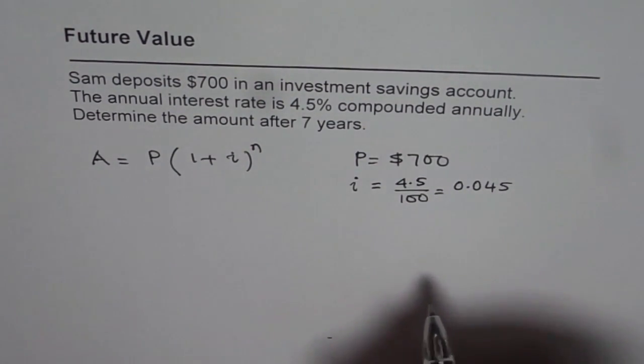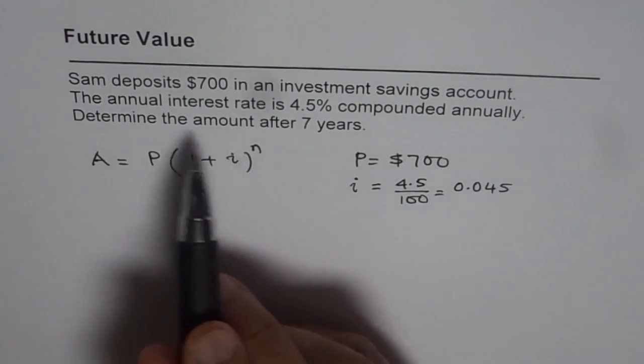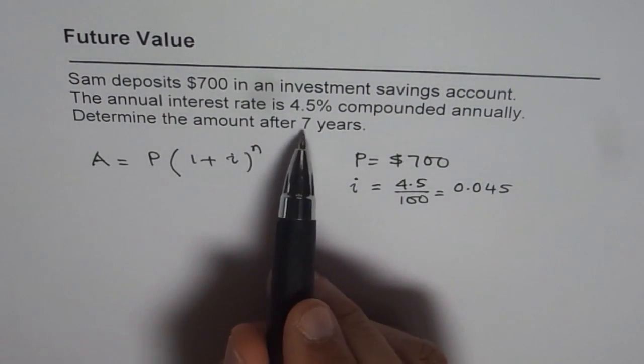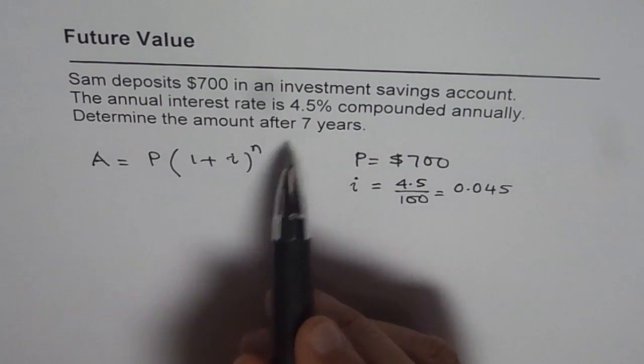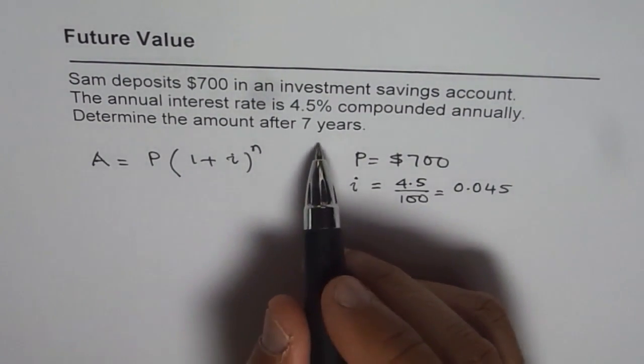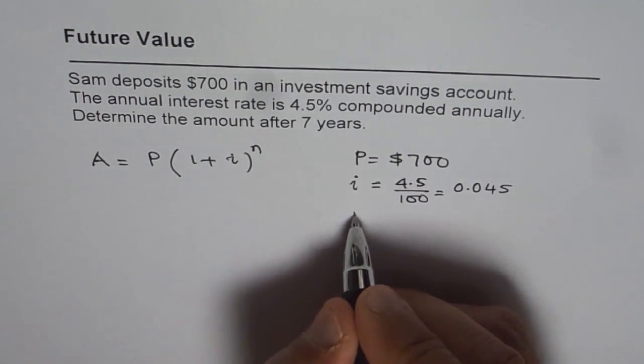So we know I. Now it says determine the amount after 7 years. N is the compounding periods. Now in this case since it is compounded annually, N is equal to 7.